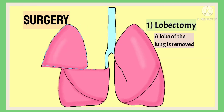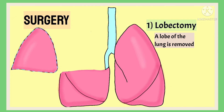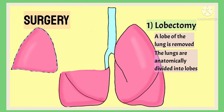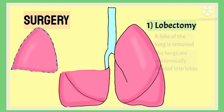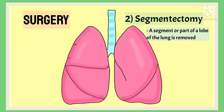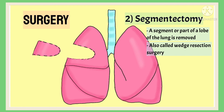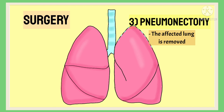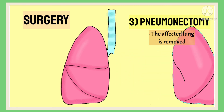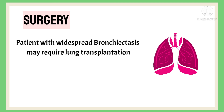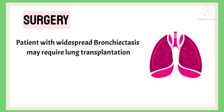Lobectomy is a surgical procedure in which a lobe of the lung is removed — the lungs are anatomically divided into lobes, and the affected lobe is removed. In segmentectomy, a segment or part of a lobe is removed, also called wedge resection surgery. In pneumonectomy, the entire affected lung is removed to improve the patient's quality of life. Patients with widespread bronchiectasis may require lung transplantation for survival.